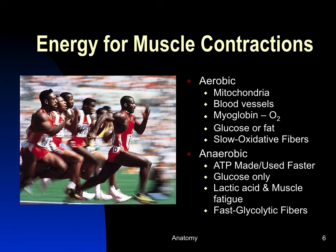ATP energy for muscle contractions comes from two sources. The first is aerobic metabolism — using oxygen to break down foods in the mitochondria. These cells have a very good blood supply and store the pigment myoglobin, which grabs and holds oxygen at the muscle. They can use glucose or fat as energy sources and are very resistant to fatigue. They have a slow myosin that uses ATP at a slower but continuous rate. These are called slow oxidative fibers. Your postural muscles are like this, and long-distance runners train to develop these characteristics.